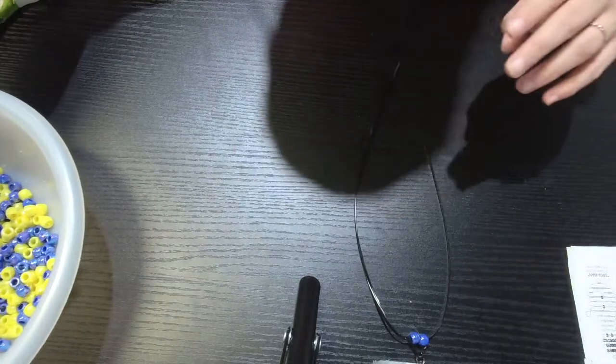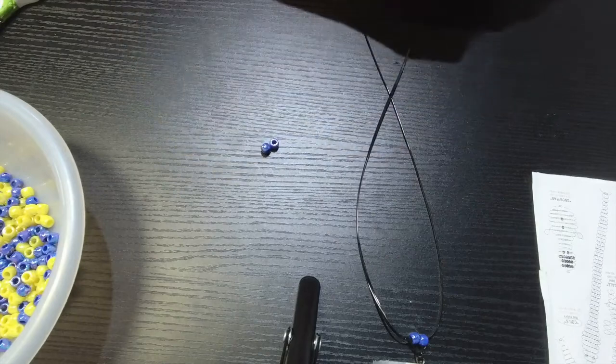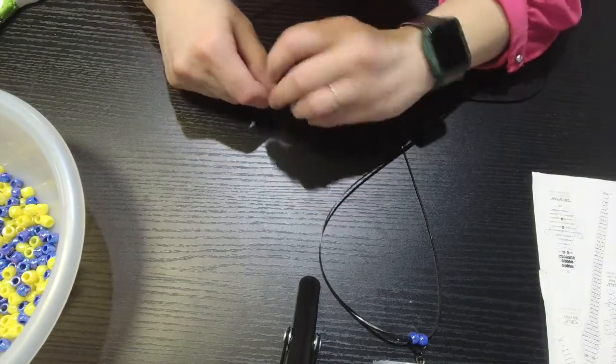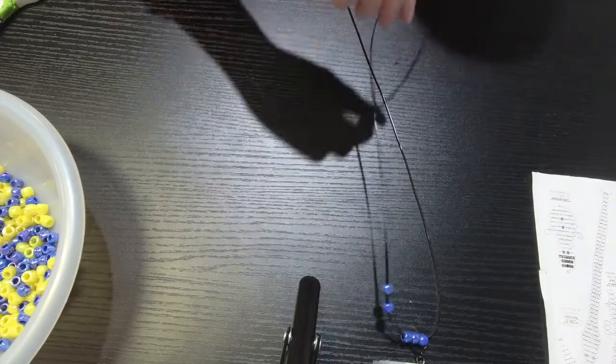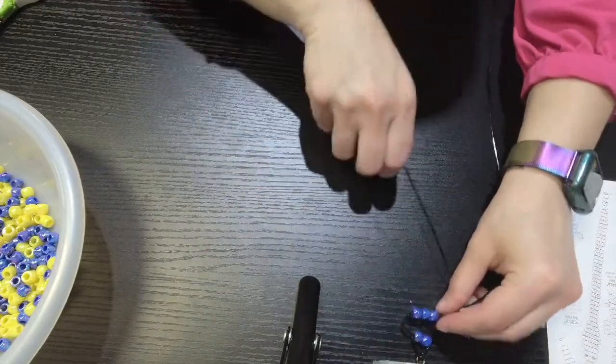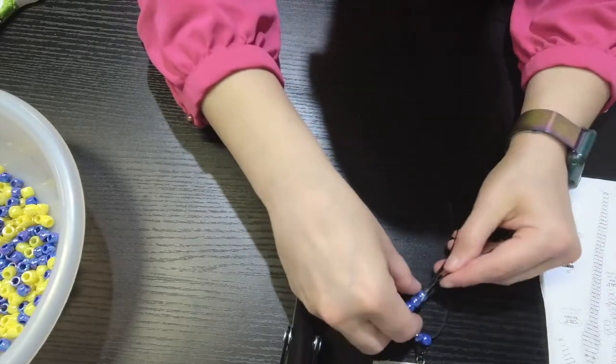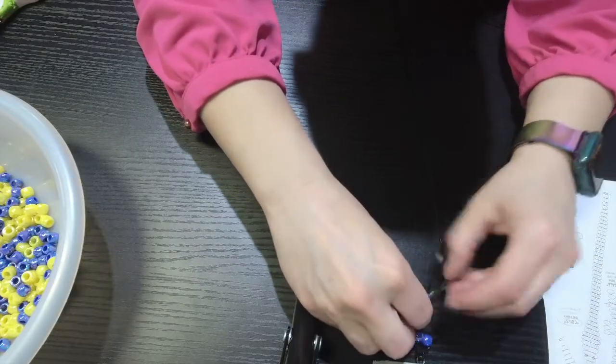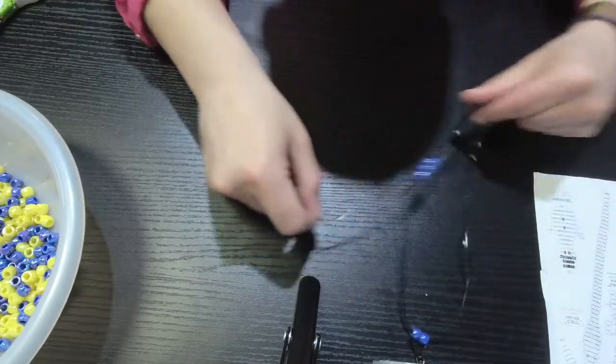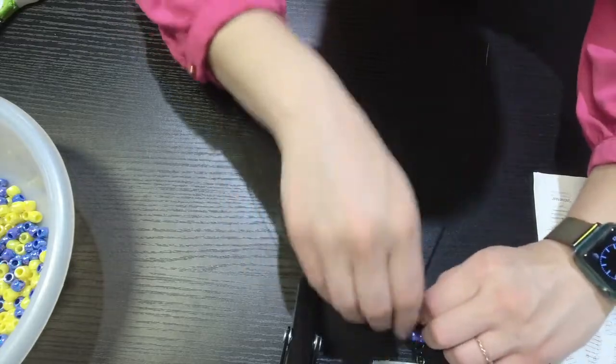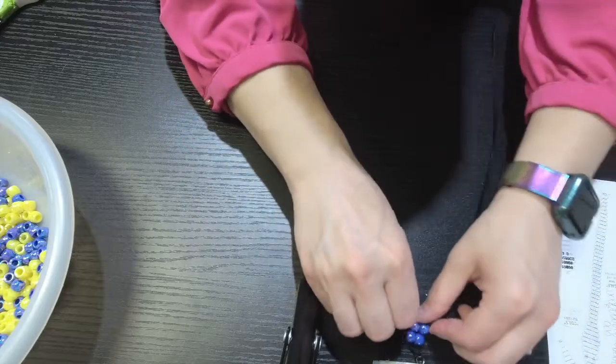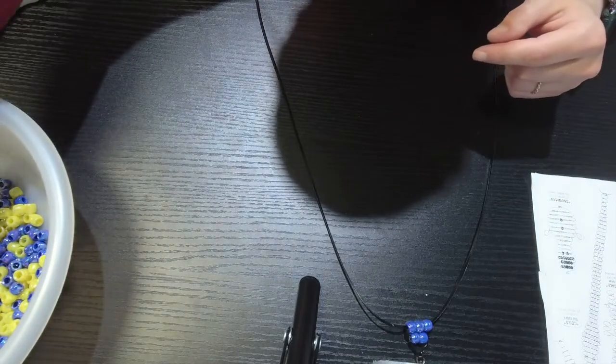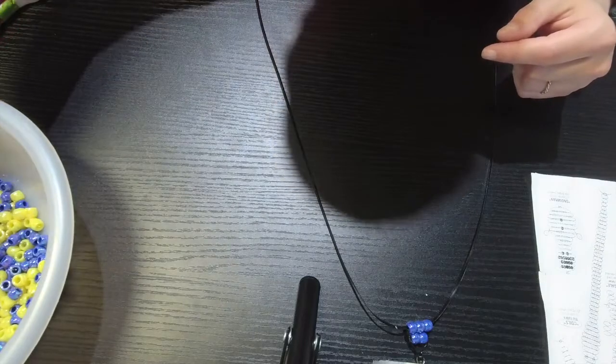The next row is going to be three of the dark colors, so blue in this case. Like I said, you can use whatever color combination you like. If you go like this, flip it over like this, grab the other string or cord, and put it through the other direction. And so we go on following the pattern.